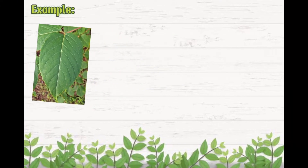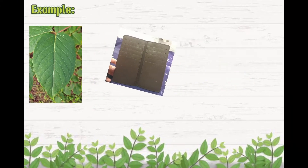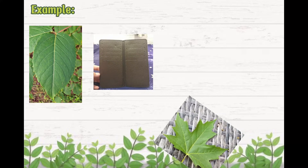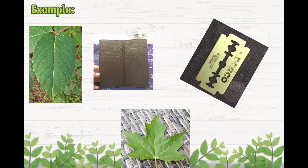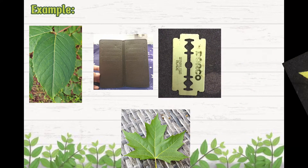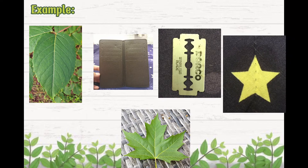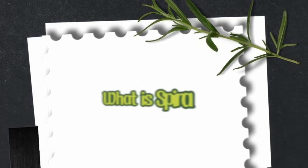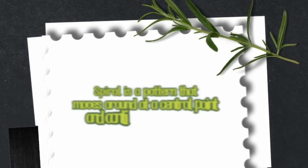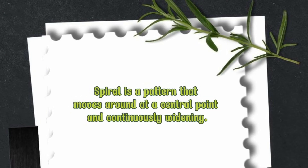Example. What is Spiral? Spiral is a pattern that moves around at a central point and continuously widening. Example.